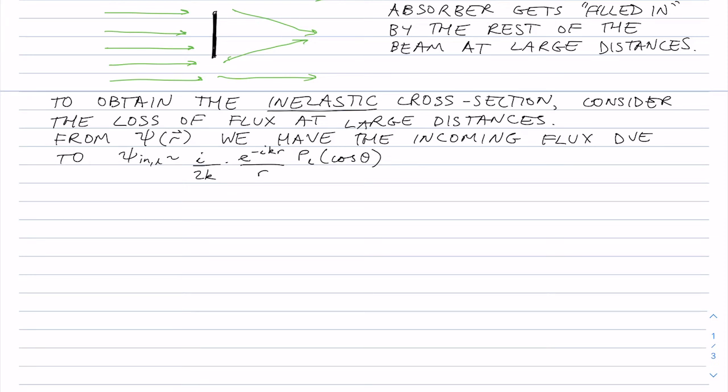So this is the wave function for the incoming wave at large distances. And so the incoming flux is the total incoming flux through a closed surface that surrounds our scatterer at very large distances. And you can easily show that the incoming flux is h bar k over m times 4 pi over 2 k squared for each wave.